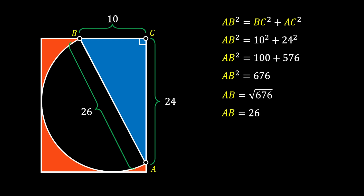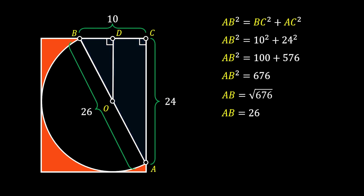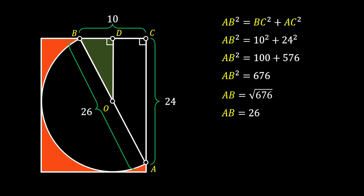Now, we will mark the center of our half circle as O. Then, we will pull a vertical line upward from point O to the upper side of our rectangle and mark this intersection as D. You can notice that at point D we also have a right angle. In this way, we have formed another right triangle OBD.